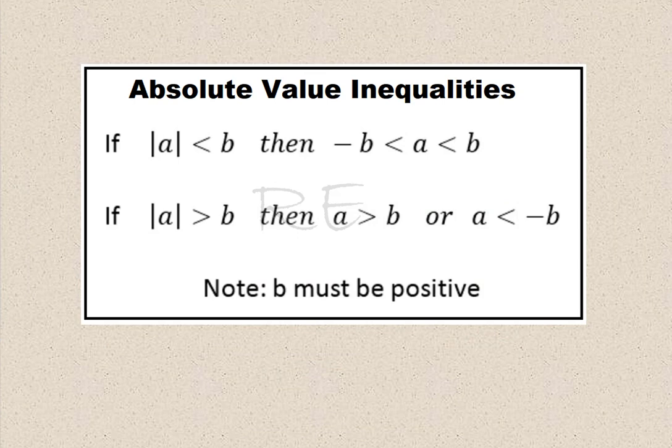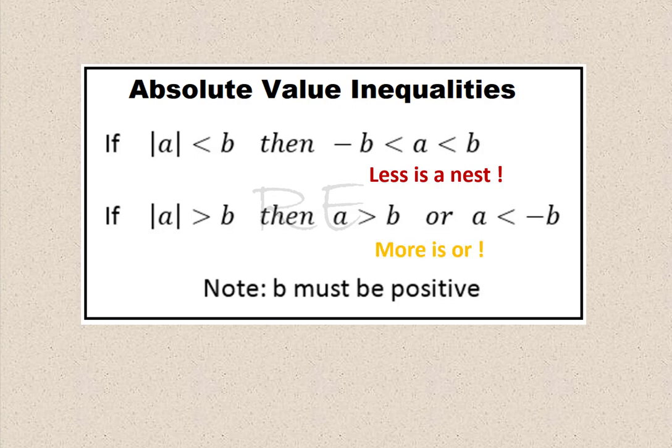A quick way to remember what to do when solving absolute value inequalities: 'Less is and' — if the absolute value of a is less than b, then a is between negative b and b. 'More is or' — if the absolute value of a is greater than b, then a is either greater than b or less than negative b.